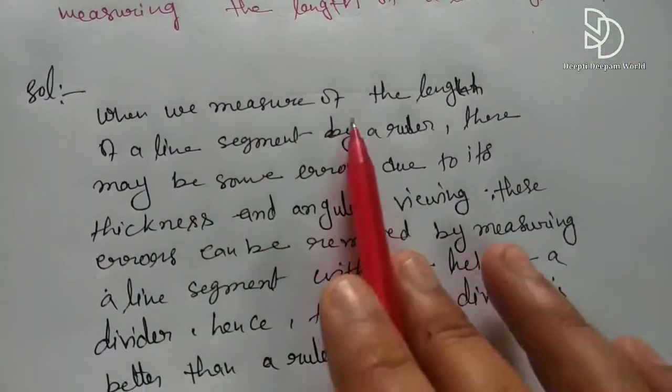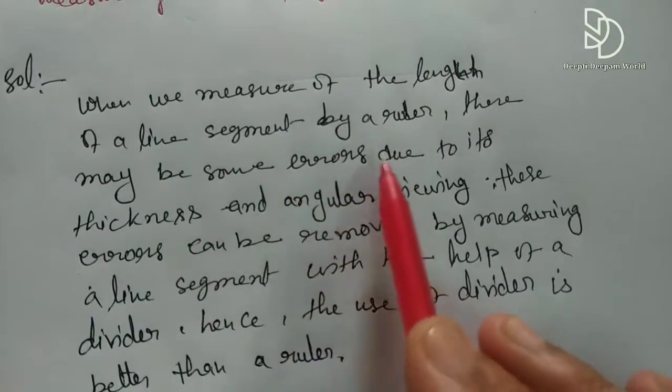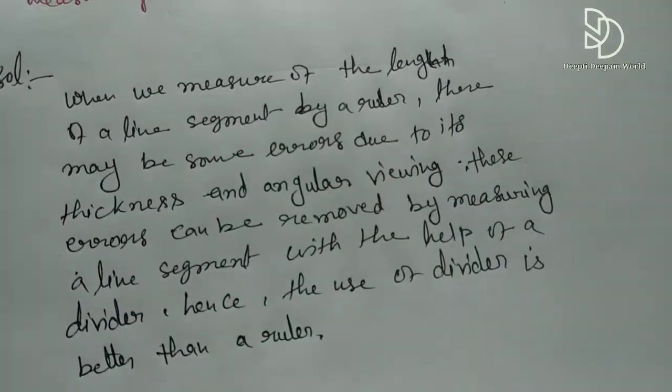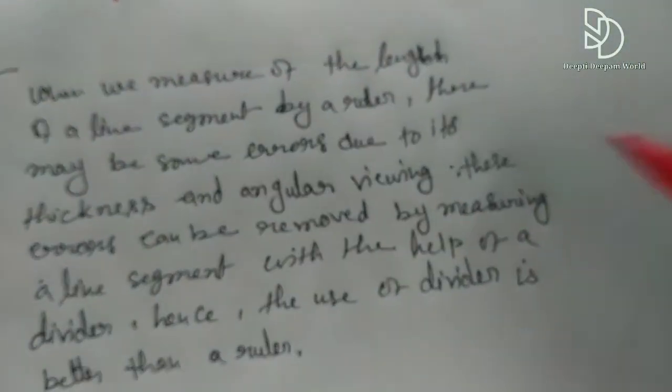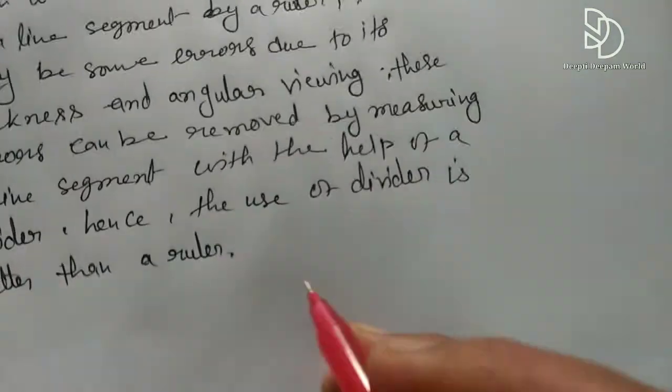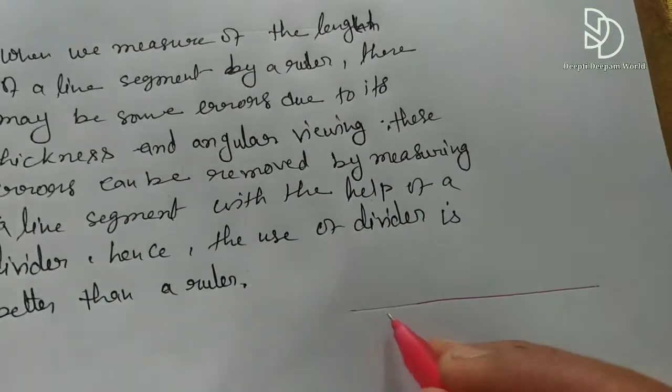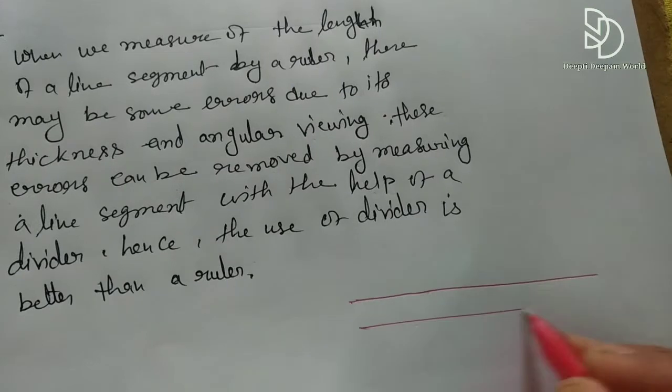So, when we measure the length with a ruler, if we measure the length of the line with the ruler, there can be errors in the measurement.